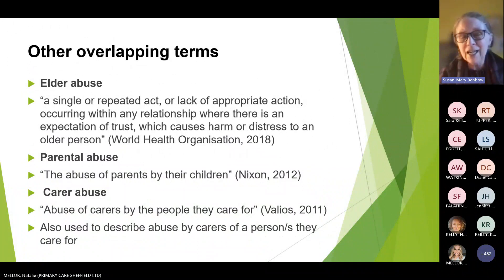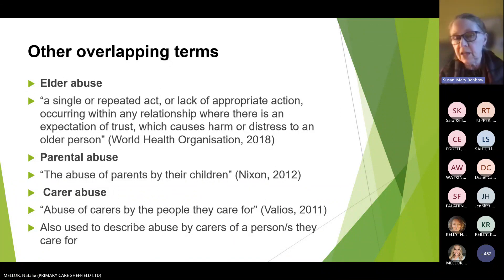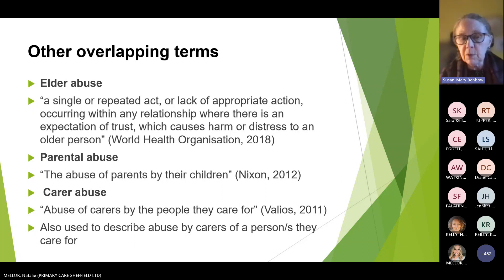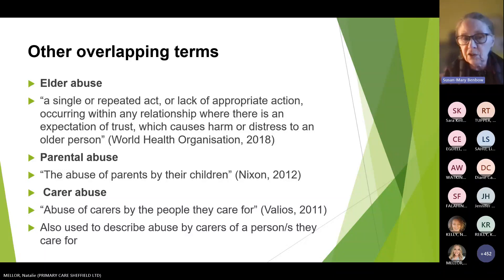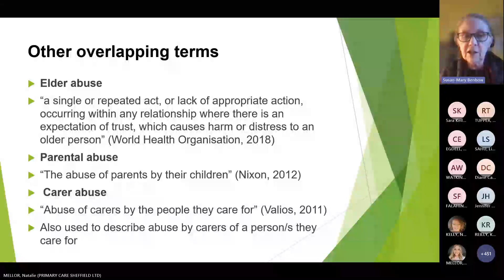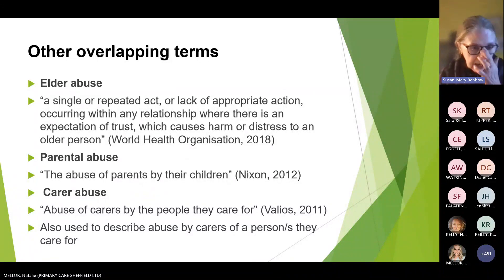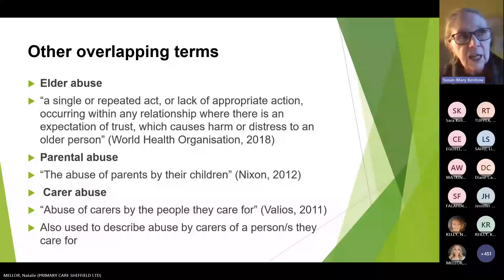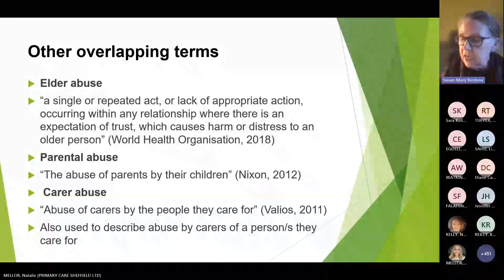The terminology gets really complicated because people use other terms that overlap with domestic abuse and with caregiver or care recipient abuse. There's the term 'elder abuse' for those over 65, 'parental abuse' — abuse of parents by their children, which could be adult children and might be understood as adult family violence — and 'carer abuse,' though searching that term produces very different results depending on context.